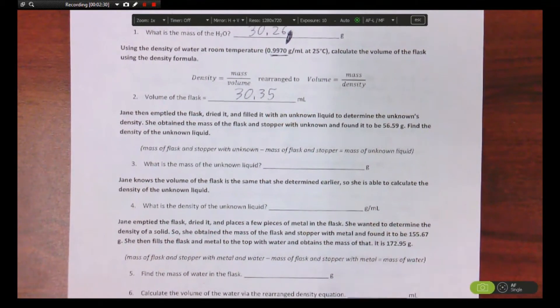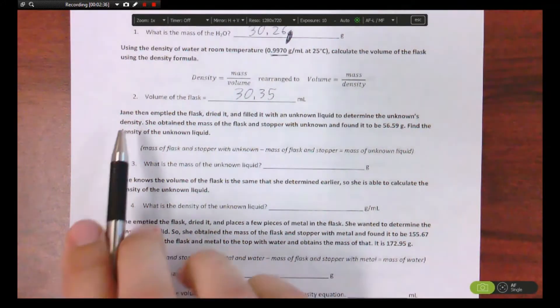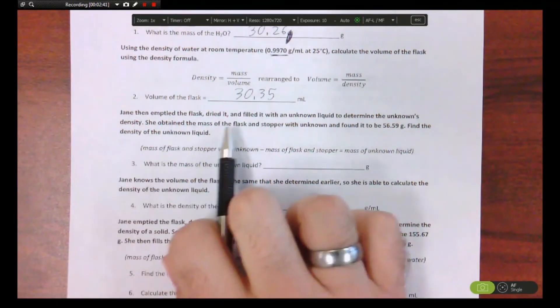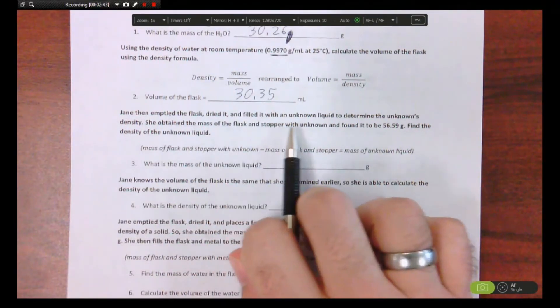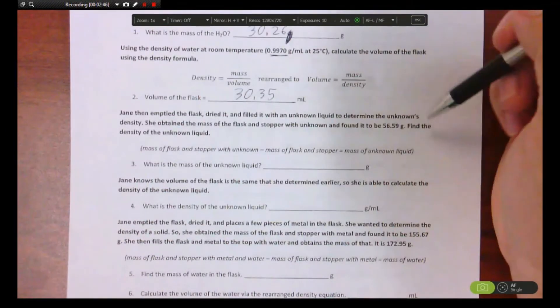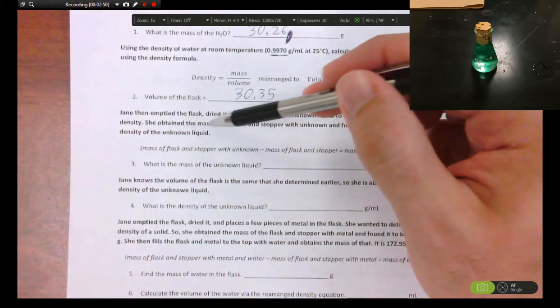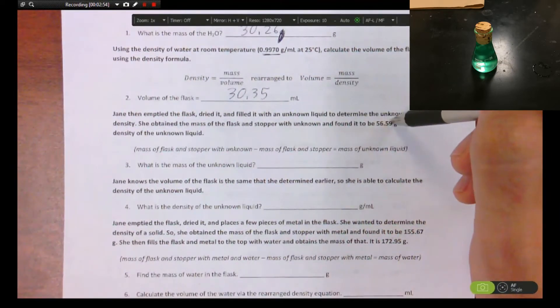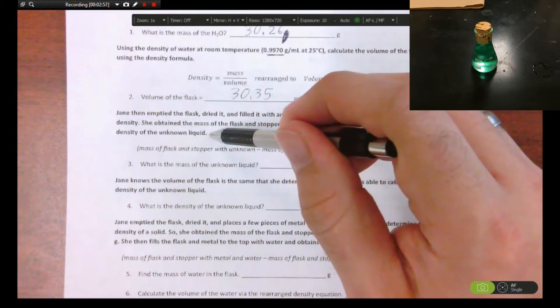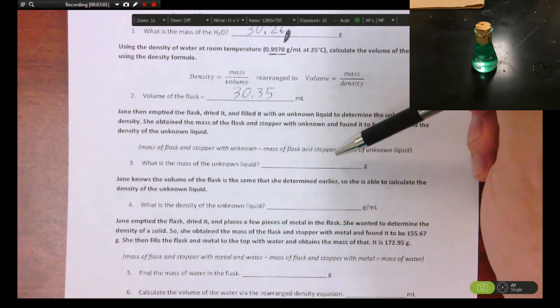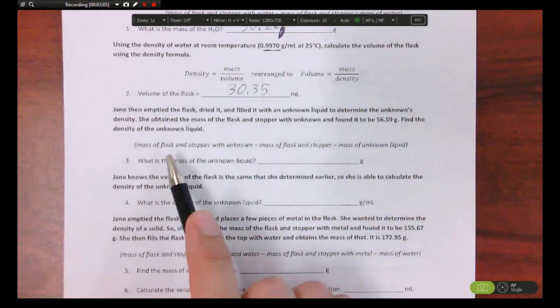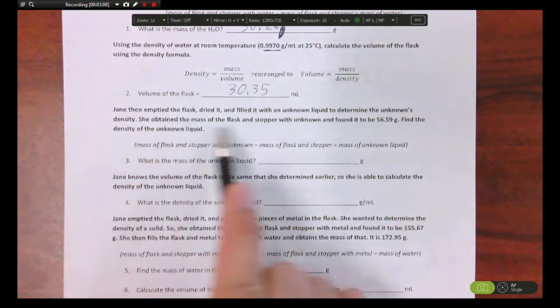So down here, I'm going to scoot up a little bit. Number three says what is the mass of the unknown liquid. Now they basically said that she goes back taking the same flask. Now keep this in mind, it's the same flask, she already has the mass of that flask. She emptied it, dried it, filled it with the unknown liquid, and you are going to have unknown liquid to determine its unknown density. She obtained the mass of the flask and stopper with the unknown and found it to be 56.59. Find the density of the unknown liquid. Now it's kind of jumping ahead, you're going to have to do one step before you find the density, you got to find the mass of the unknown liquid first. So they tell you here the mass of the flask and stopper with unknown, which was right here, minus the mass of the flask and stopper that's all the way back from up here.